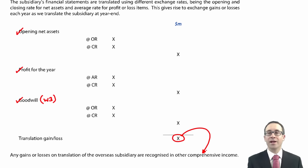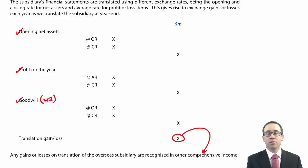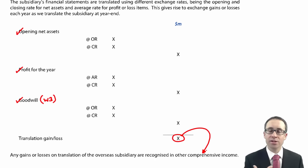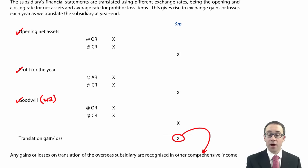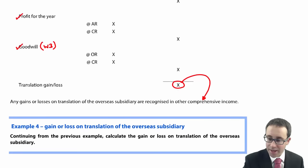You only need to calculate this exchange gain or loss if the question categorically says to calculate the exchange gain or loss on translation of the overseas subsidiary, or if it is asking you to prepare the group statement of profit or loss and other comprehensive income. So just be aware of the scenarios when you need to go through and calculate it. What we'll go through and do is play around with it by using the example.